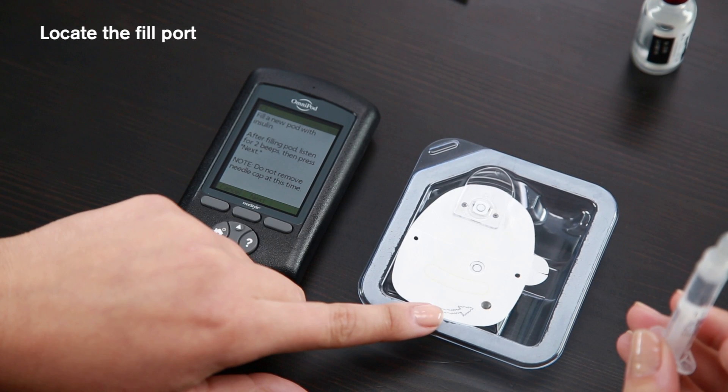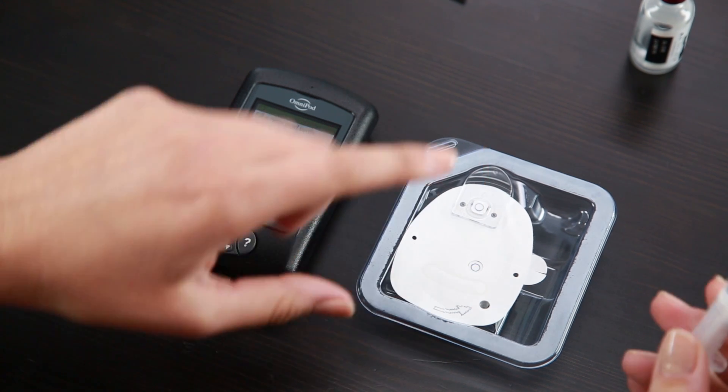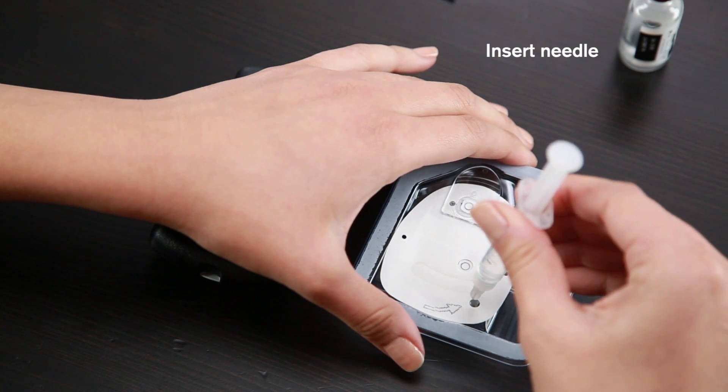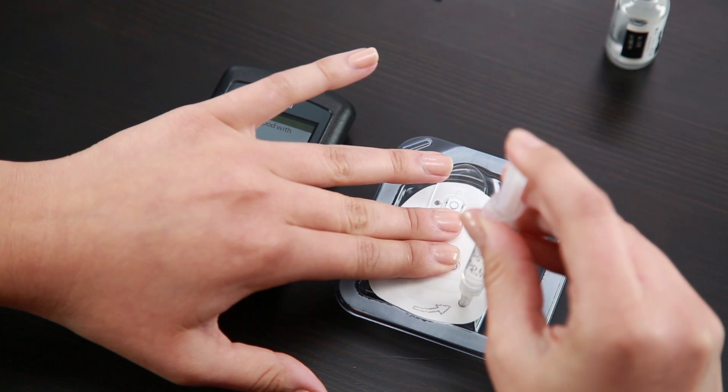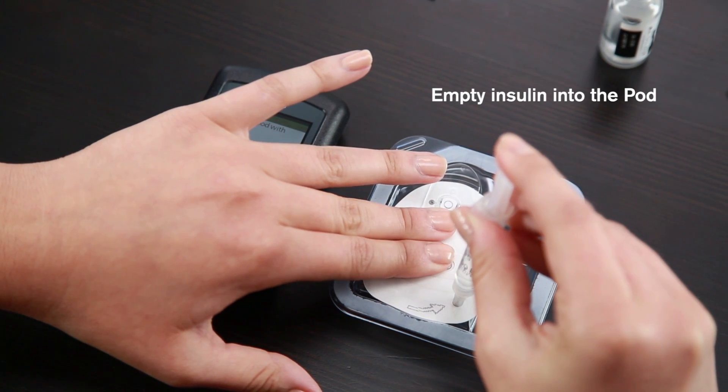Locate the marked black arrow on the underside of the pod. This is the fill port. Insert the needle straight down into the fill port. It is easiest to keep the pod in its tray while filling. Make sure to completely empty the syringe into the pod.